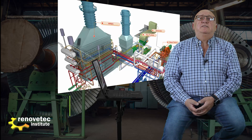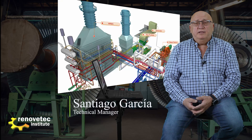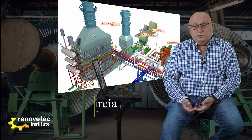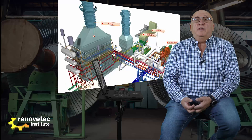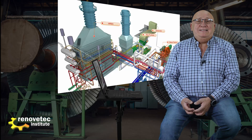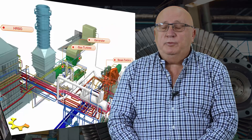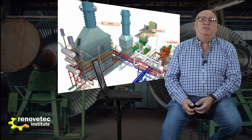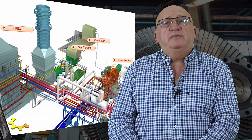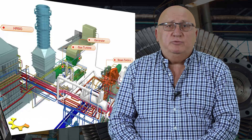The GT26 Alston gas turbine is one of the biggest turbines made by Alston — at this moment GE Alston — with a power of 260 megawatts, with a sequential combustion chamber and an annular combustion chamber. We will see in this video the main parts and the main elements of the GT26.